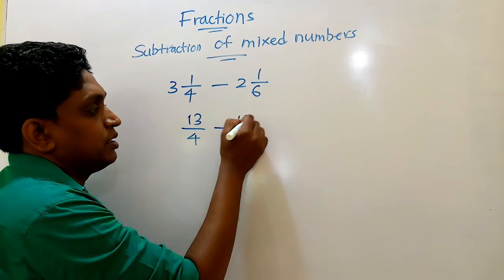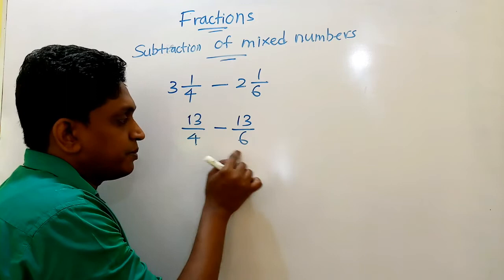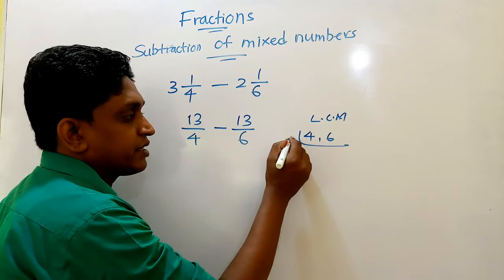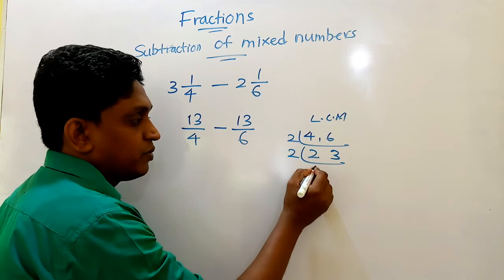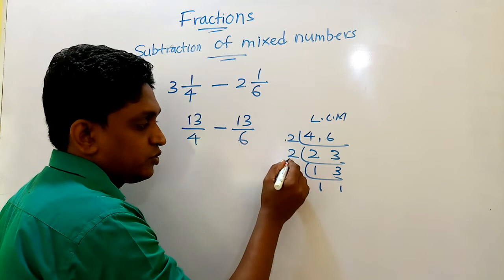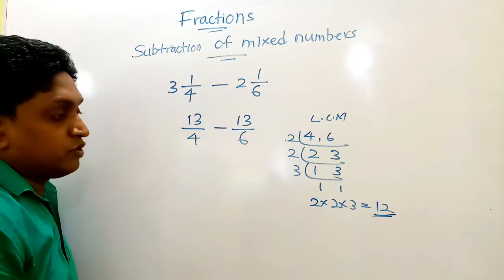Now, we want to get least common multiple of 6 and 4. So 6 and 4 LCM. We can try by 2. 2, 6 divisible by 2, it is 3. Again, I try by 2. So 1, not divisible. Now by 3, 1 and 1. So 2 into 2 into 3, it is 12. So that is our LCM.